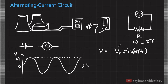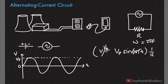Now if I substitute Ohm's law here — V equals IR — in other words, I multiply both sides of the equation by 1 over R, I'll end up with the equation for current.